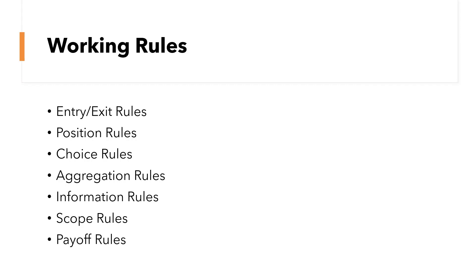Then we have position rules. These are the rules that show how someone moves from being just a member of a group to a person who has a specialized task. For example, to go a little bit deeper into that position rules idea, it's like when we elect a president — that person goes from being an ordinary citizen to a person who leads the entire country for the next four years.